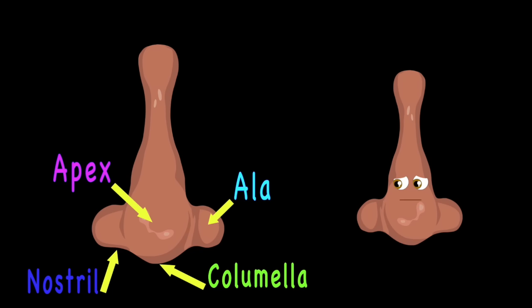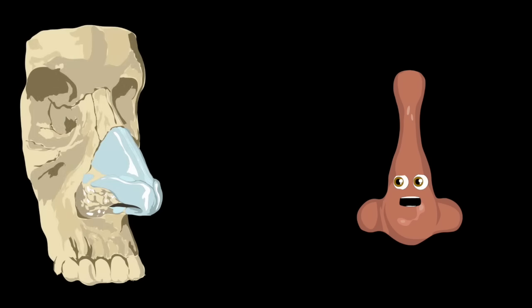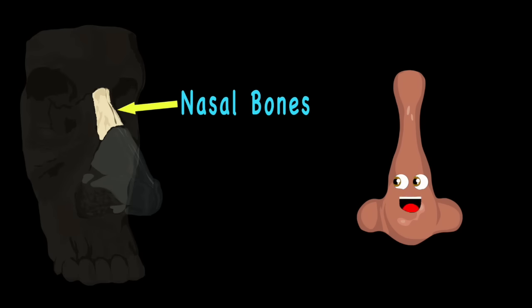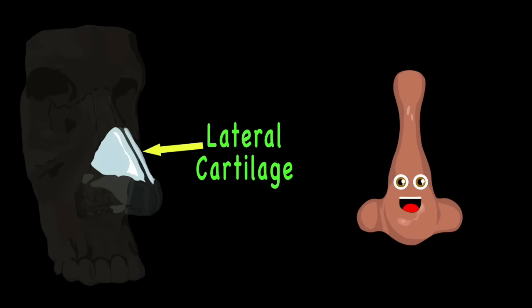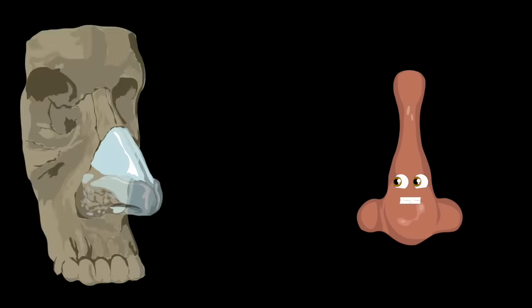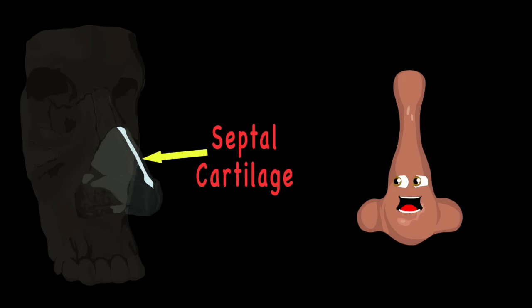Now let's move on to the inner parts of your nose. The nasal bone supports the upper bridge — now you know. The upper lateral cartilage forms your side walls. The septal cartilage runs down the center and it's tall.